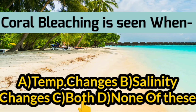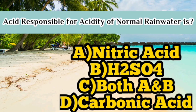The next question asks which acid is responsible for the acidity of normal rain water. The correct option is D — carbonic acid. Note that nitric acid and sulfuric acid are related to acid rain, but for normal rain water, the answer is carbonic acid.